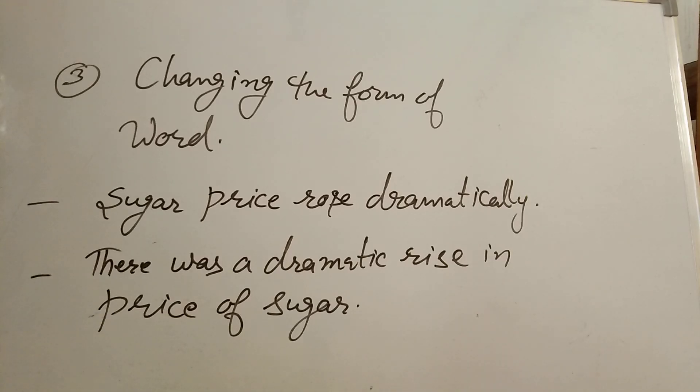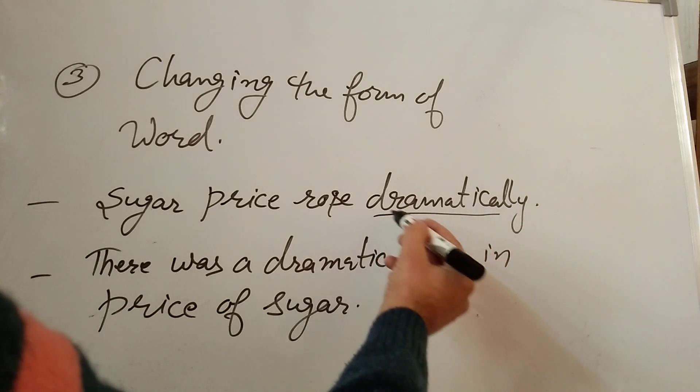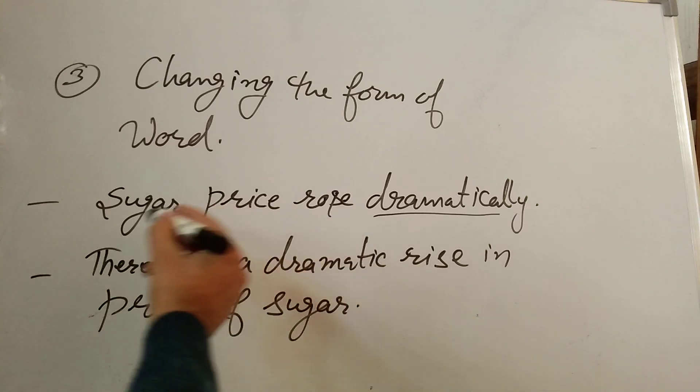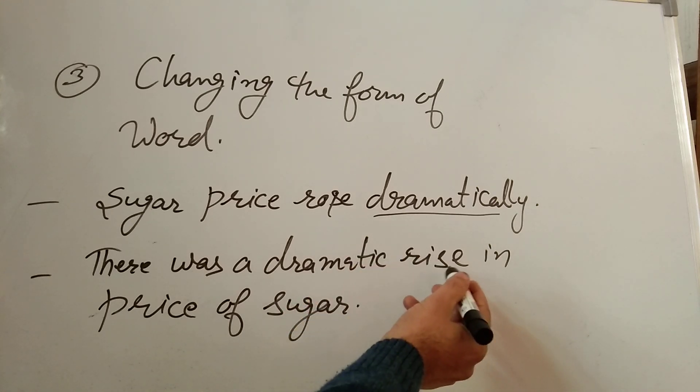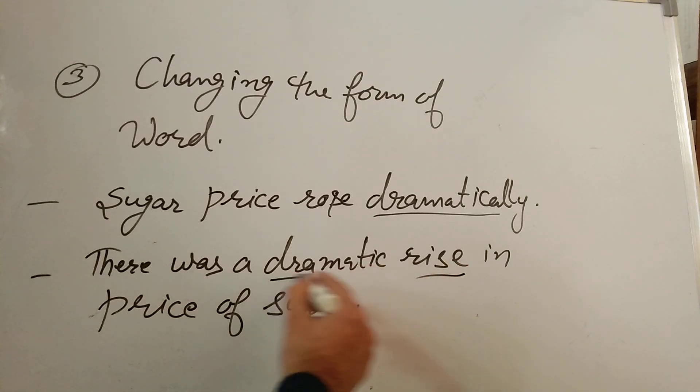Look at the example. Sugar price rose dramatically. So, dramatically is adverb here. Rose, verb, sugar price, subject. And there was a dramatic rise. Rose is changed into rise and dramatically into dramatic. So, rise has become a noun. This is a noun here. And this is adjective.